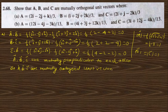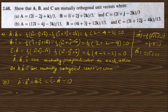So A dot B equals B dot C equals C dot A equals zero, confirming they are orthogonal, and the magnitudes of A, B, and C all equal one. Therefore A, B, C are mutually orthogonal unit vectors.